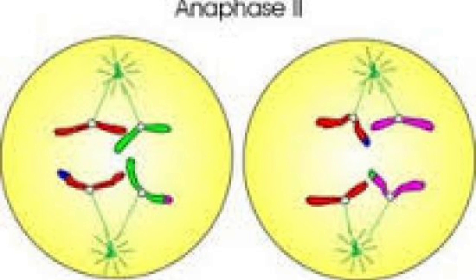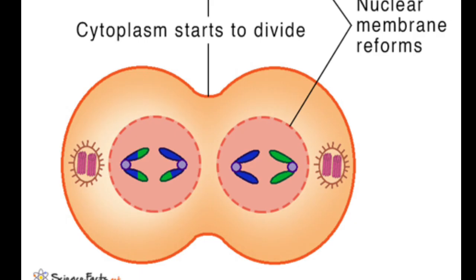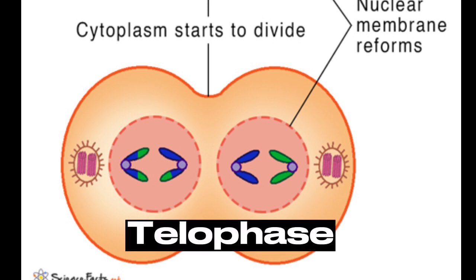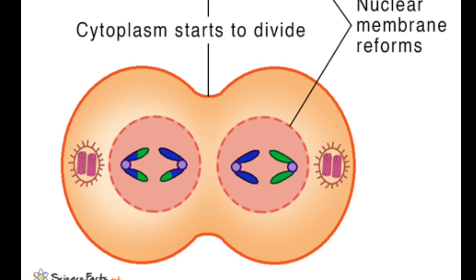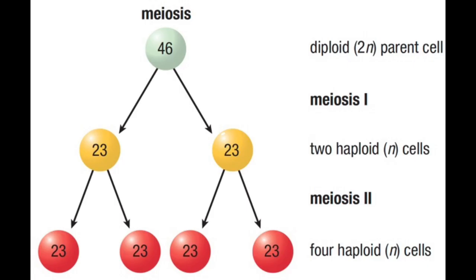So 23 single-structured chromosomes are pulled to one end, while the other 23 single-structured chromosomes are pulled to the other end. In meiosis 1, double-structured chromosomes were pulled to opposite ends, but in meiosis 2, single-structured chromosomes are pulled to opposite ends. After the completion of anaphase 2, the last phase is telophase 2, where the cell is split along its midpoint into 2 daughter cells. The total number of daughter cells produced during meiosis is 4, and each of these 4 daughter cells contains 23 single-structured chromosomes. This is the end of meiosis.